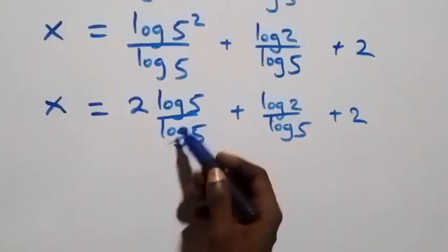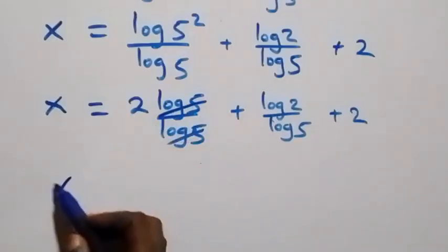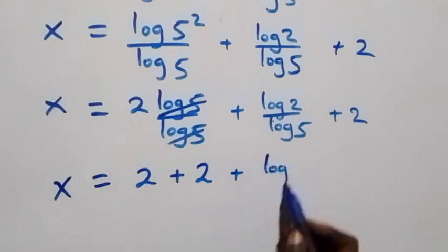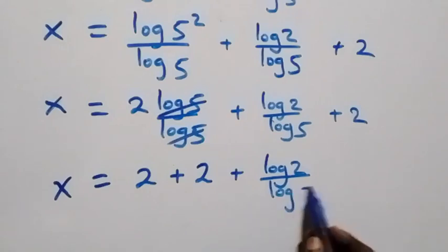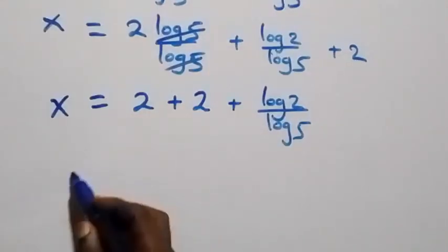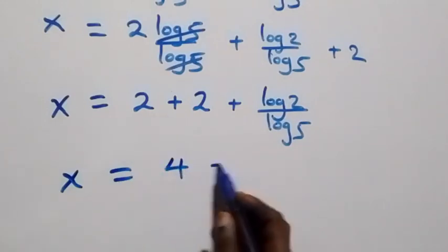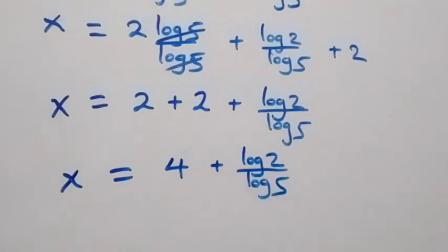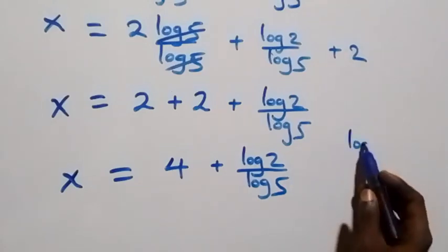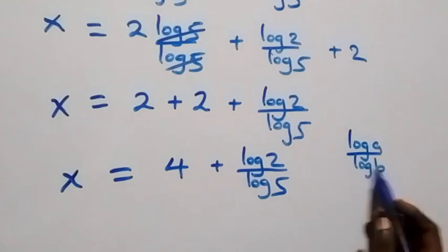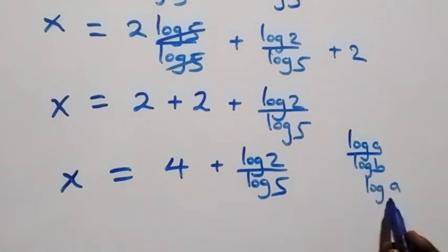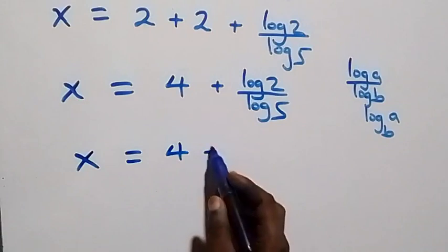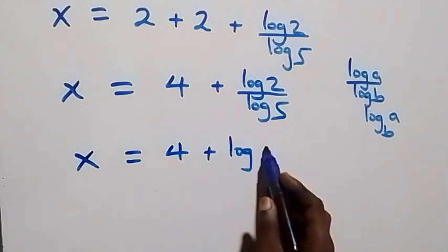That is, x equals to 2 plus 2, then plus log 2 over log 5. This becomes x equals to 4 plus log 2 over log 5. Then applying the change of base formula, where log a over log b is the same thing as log a to base b, we have x equals to 4 plus log 2 to base 5.